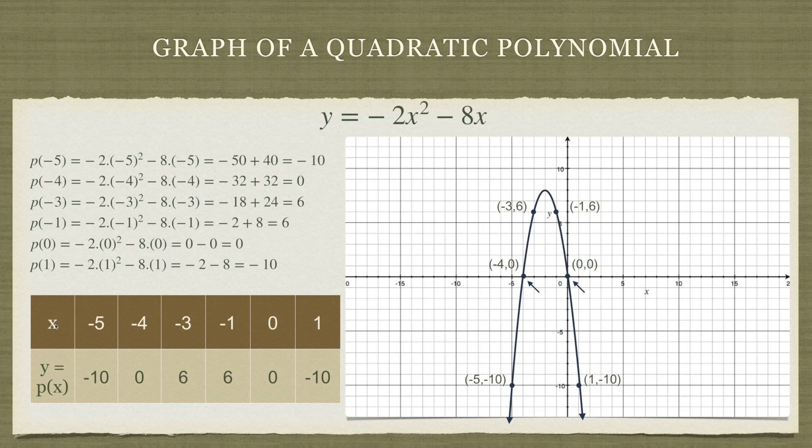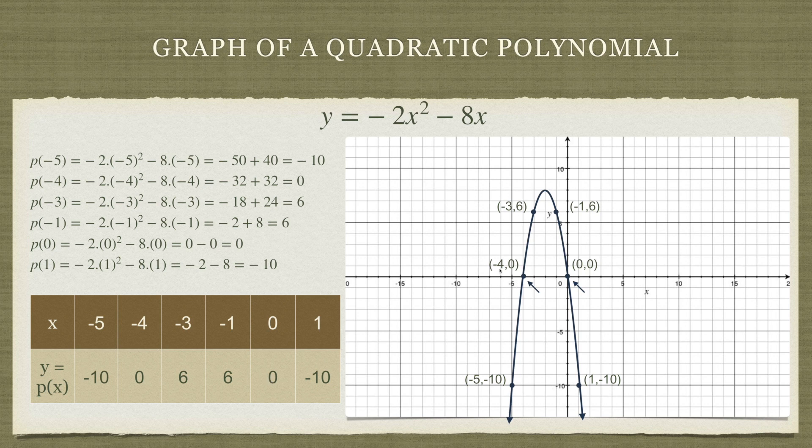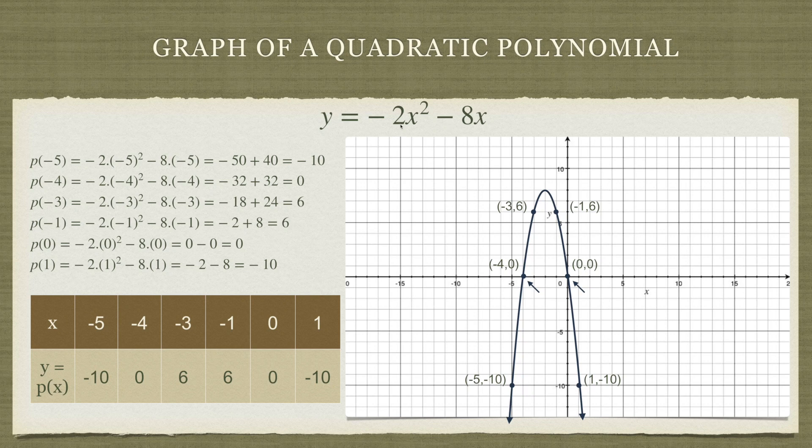We have done it over here. For x equals minus 4, the value of the polynomial is 0. At x equals 0, the value of the polynomial is 0. So we call minus 4 and 0 as zeros of this particular polynomial, minus 2x squared minus 8x.